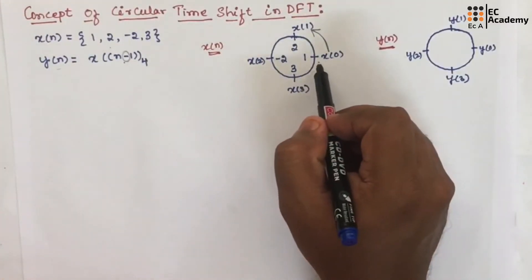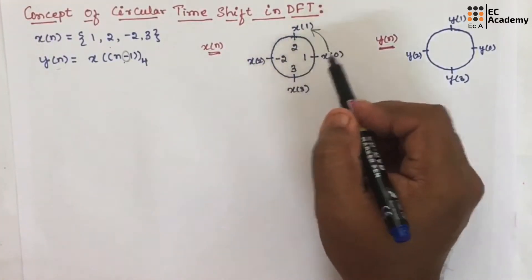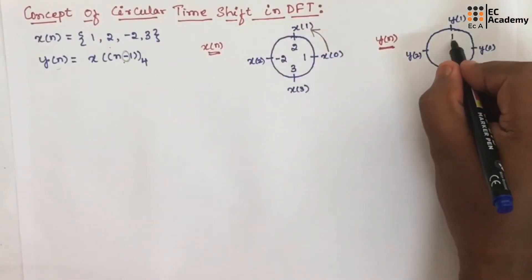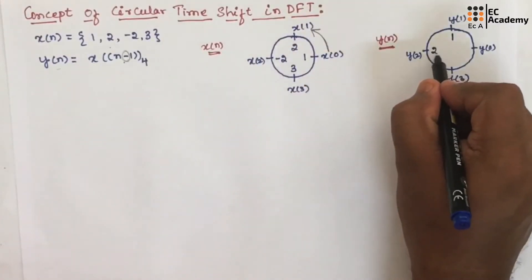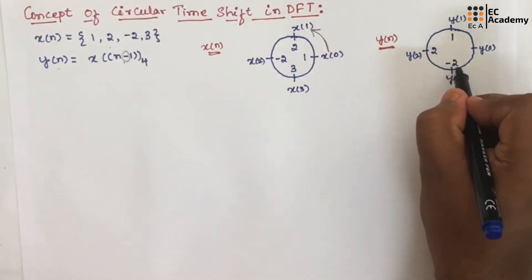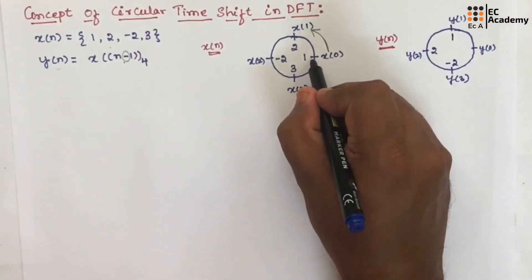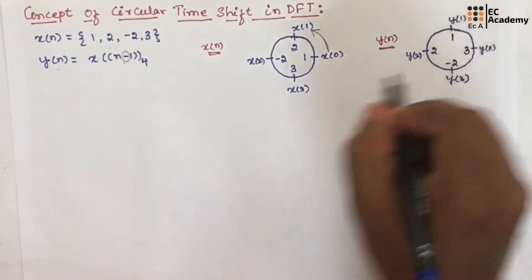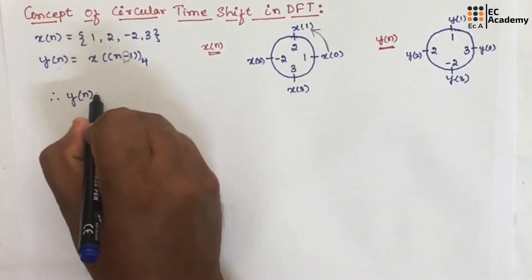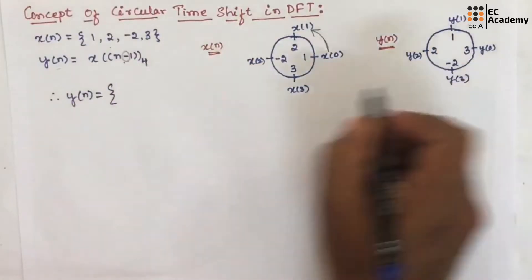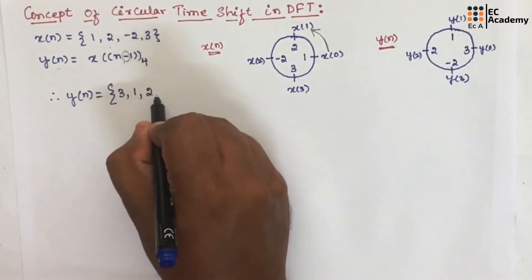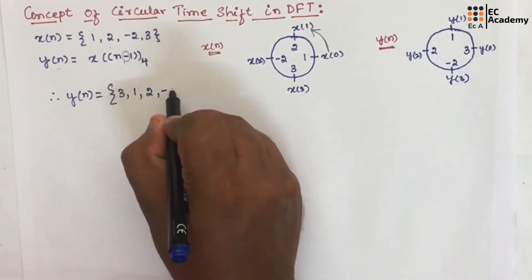If we rotate x of n one step in the anti-clockwise direction, 1 will be shifted here and 3 will be written at that position. Therefore, y of 0 is 3, y of 1 is 1, y of 2 is 2, y of 3 is minus 2.